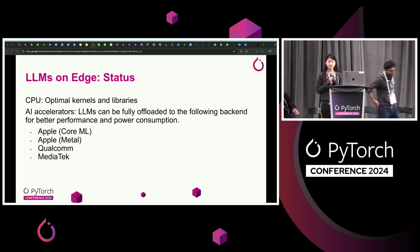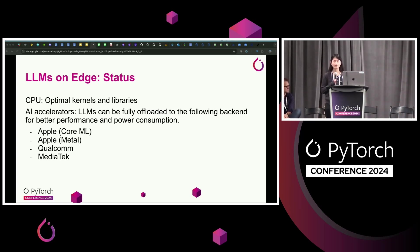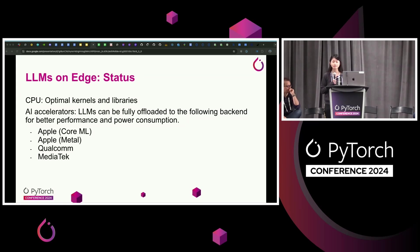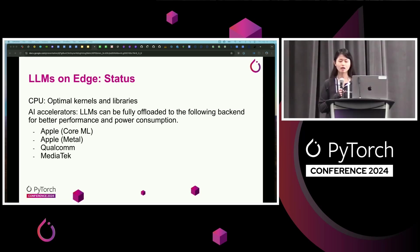So LLMs on edge — where are we? On CPU, we have optimized kernels and rely on XNNPACK. On accelerators, we are working with our partners to lower LLMs running on the backends, including CoreML, Metal, Qualcomm, and MediaTek, to achieve optimum performance with minimum power consumption. I'm going to tell you about the recent developments from our partners to integrate all these backends into ExecuTorch.